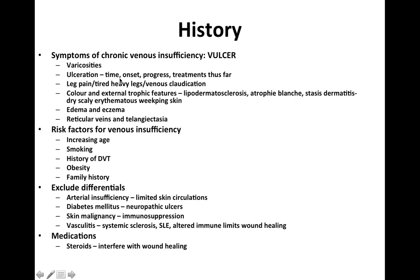U stands for ulceration — you want to ask about the time, onset, progress, and treatments thus far. L is for leg pain, tired heavy legs, and venous claudication. S is for skin colour and external trophic features such as lipodermatosclerosis, atrophie blanche, and stasis dermatitis, which is a dry, scaly, erythematous, weeping skin. From the history, her brownish discolouration suggests she may have lipodermatosclerosis.